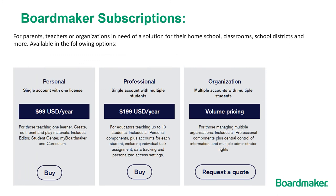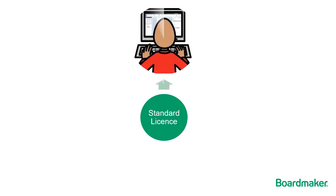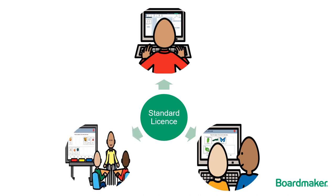For those in need of a solution for their home, school, classrooms, school districts and more, Boardmaker 7 personal and professional subscriptions can be purchased directly online for US$99 per year and US$199 per year respectively. Spectronics can build bespoke packages to meet an organisation's needs, which can include discounts for multi-user and multi-year accounts. With each Boardmaker 7 standard license you can install on two computers to create, edit and print symbol-supported materials, as well as share interactive resources with a learner on your computer, or project for small group or classroom work.